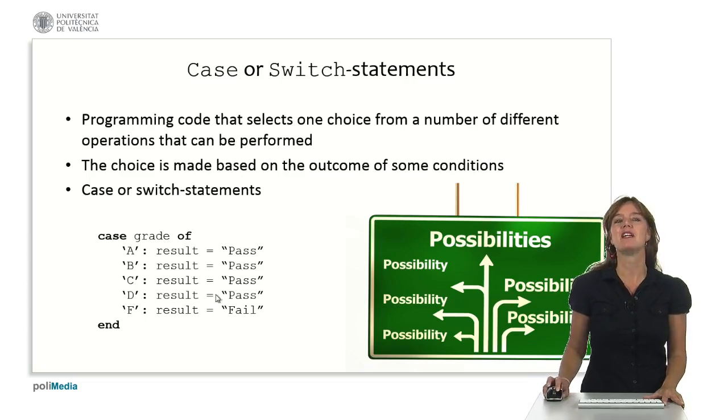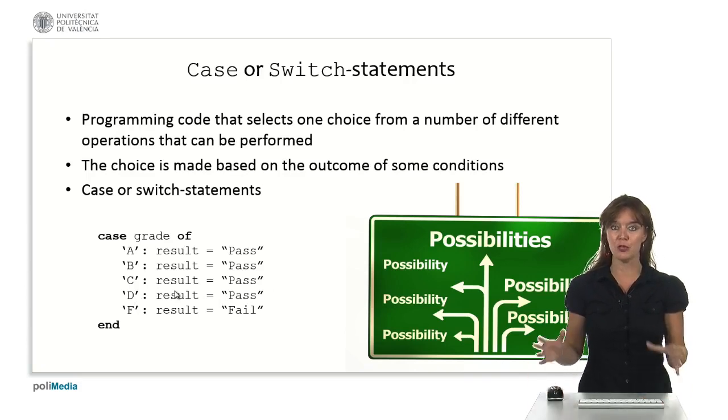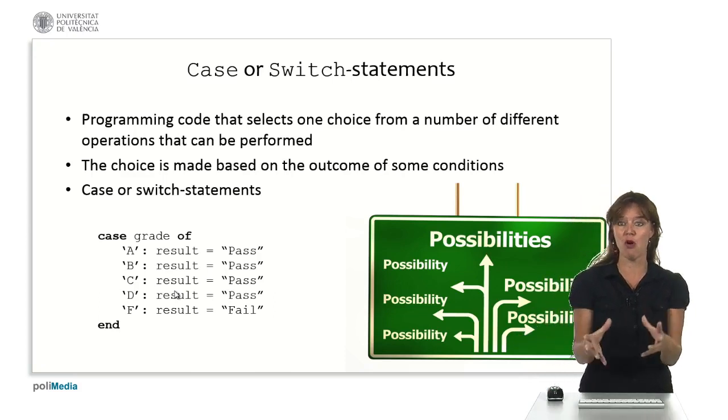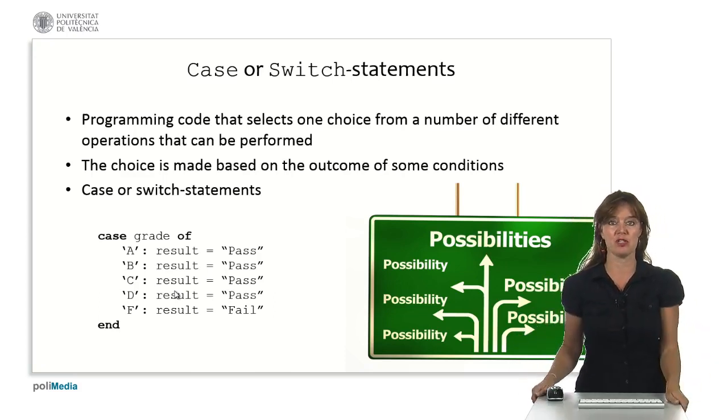And if it's an F it's a fail. This is another decision structure to make your code go where you want it to go based on specific conditions and decisions.